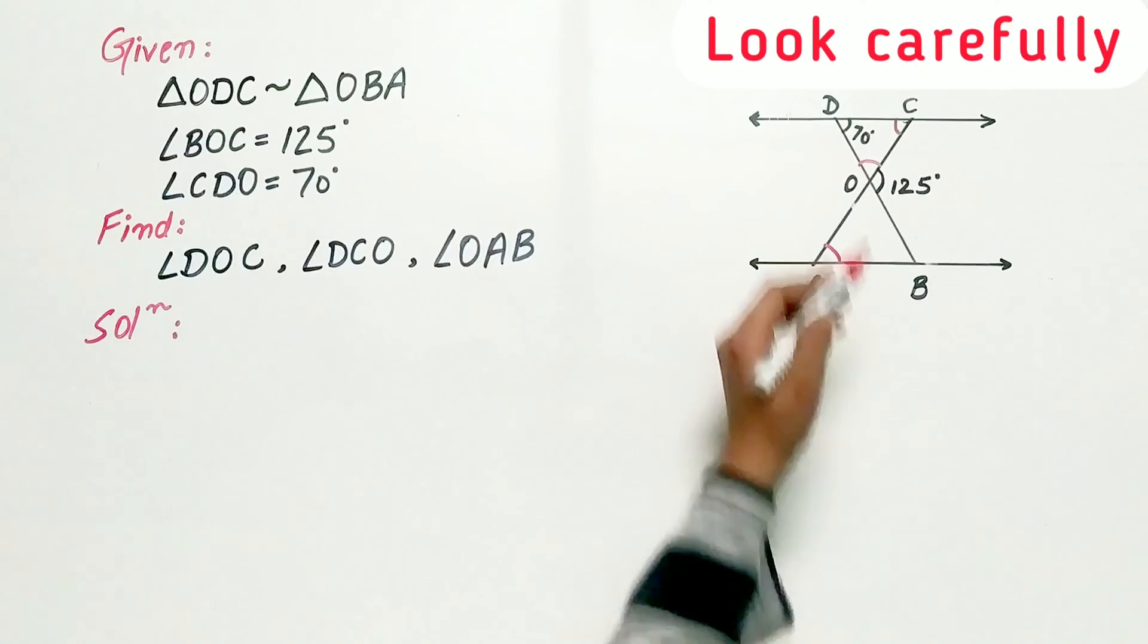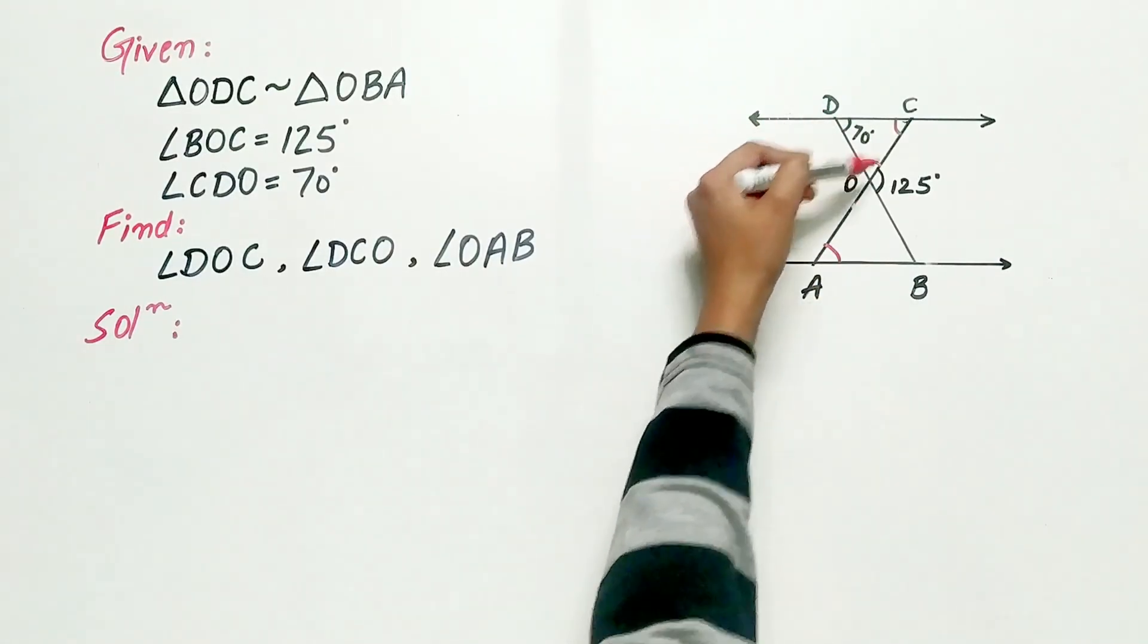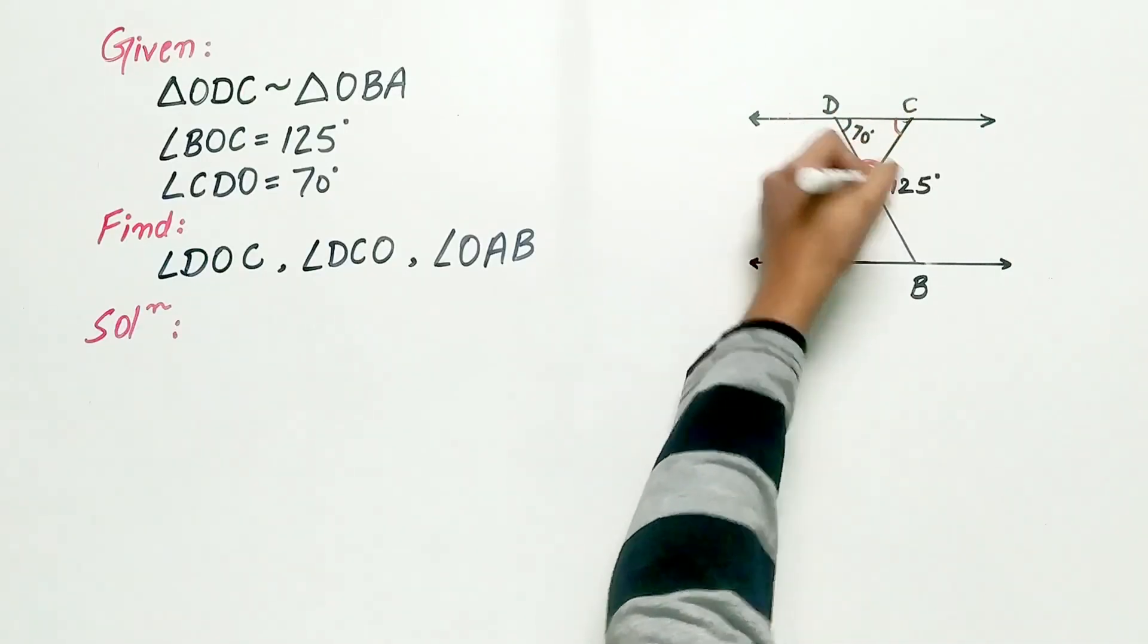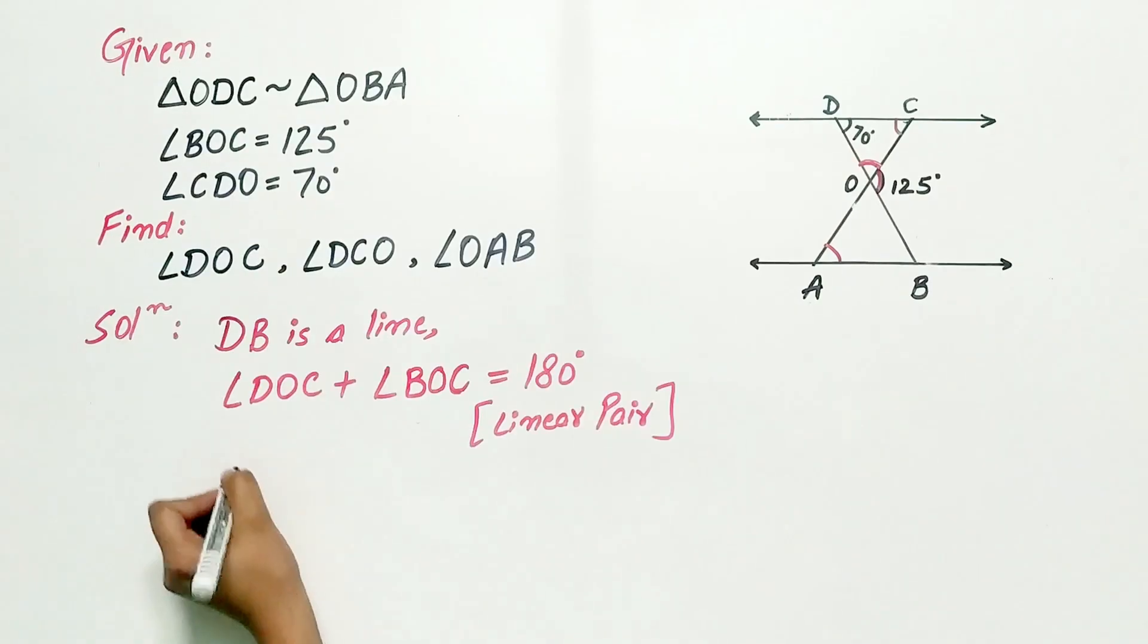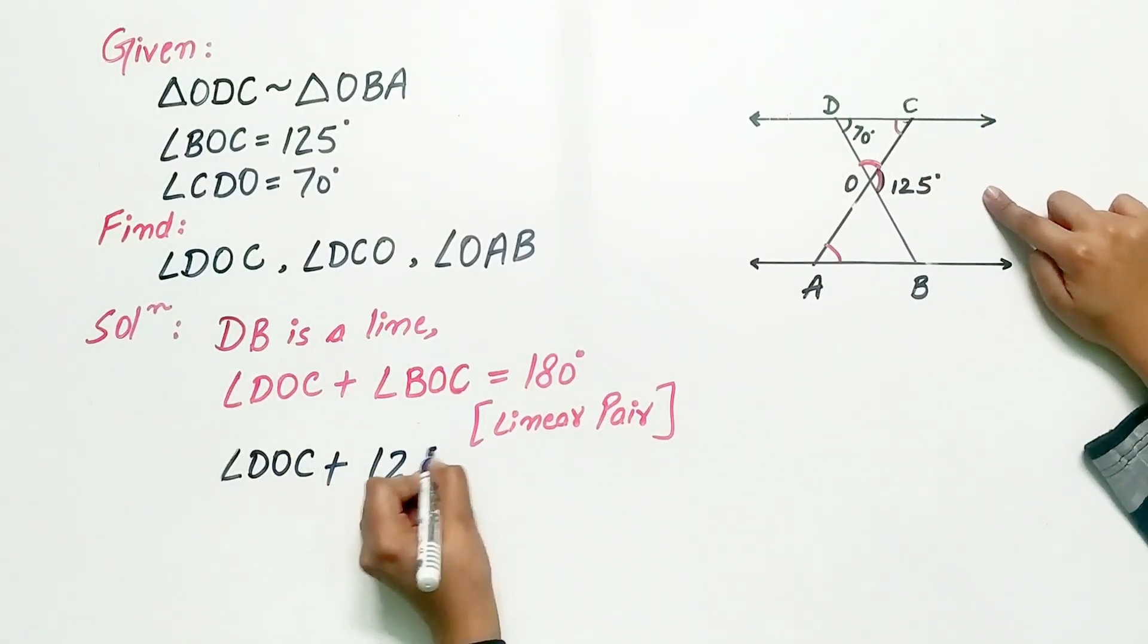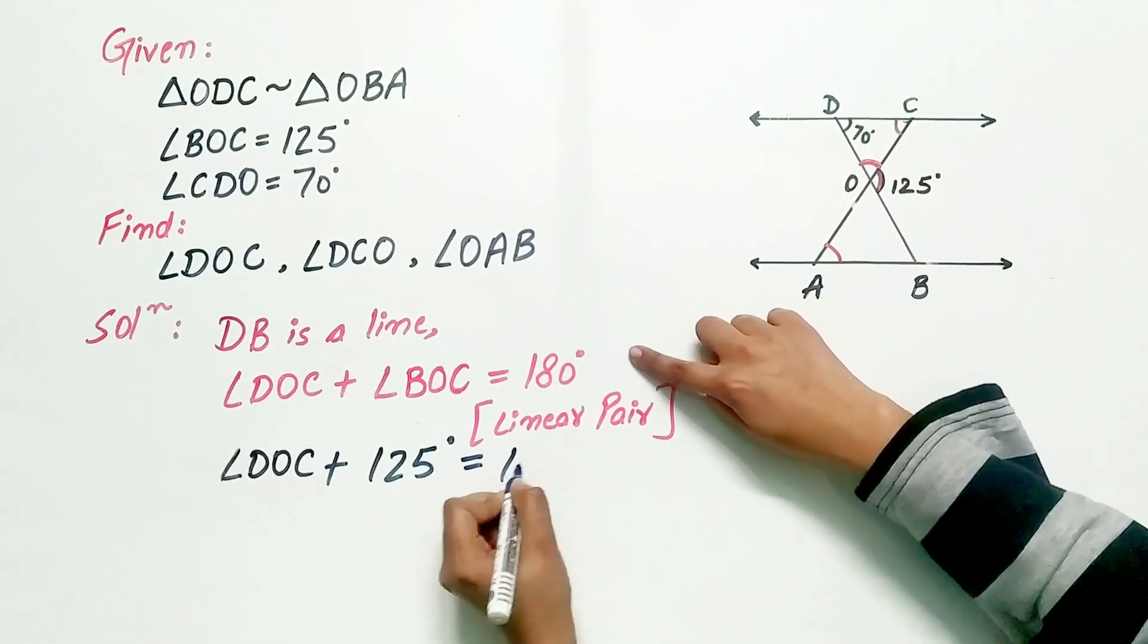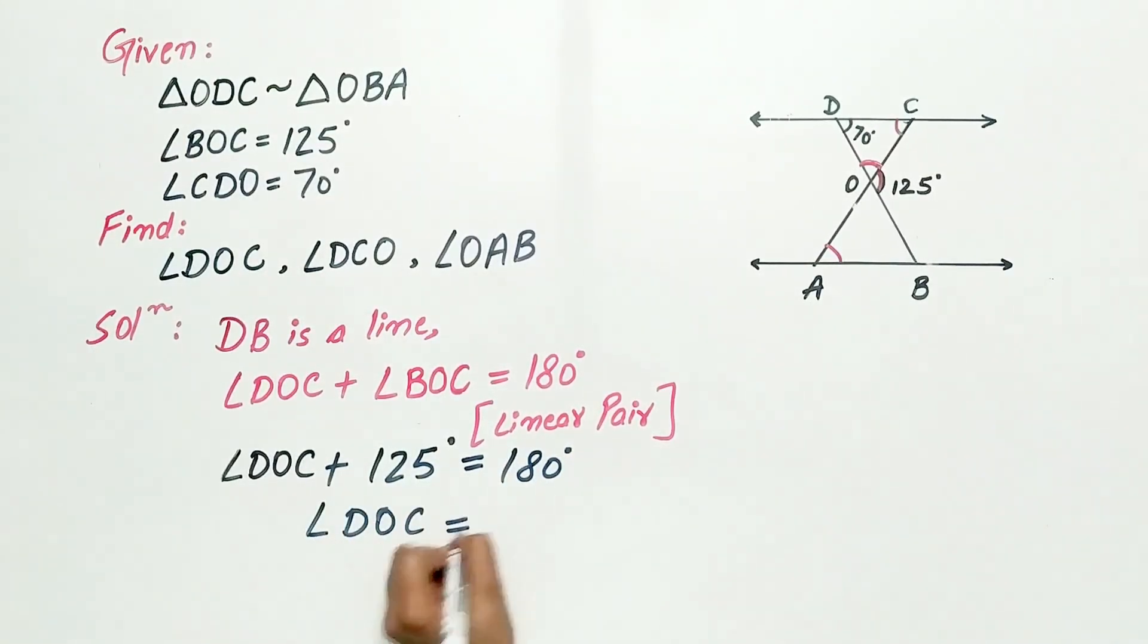Now look carefully, DB is a line, hence angle DOC plus angle COB is equal to 180 degree. Angle DOC we have to find out, and angle BOC is 125 degree, which is equal to 180 degree. Now, angle DOC is equal to 180 degree minus 125 degree, equal to 55 degree.